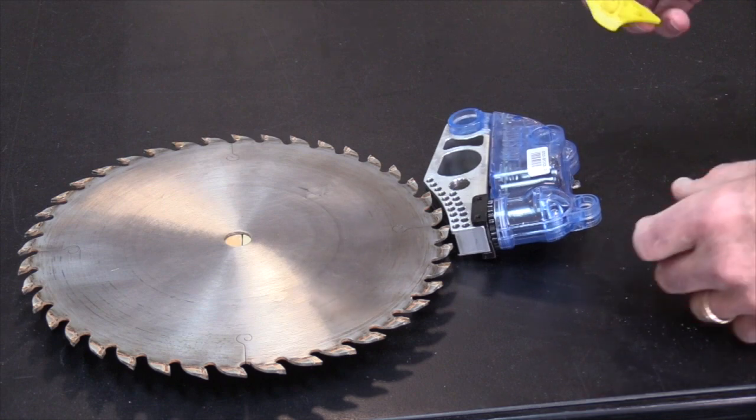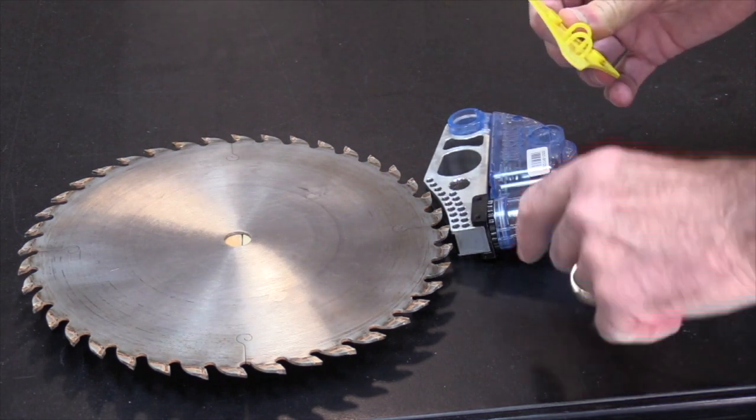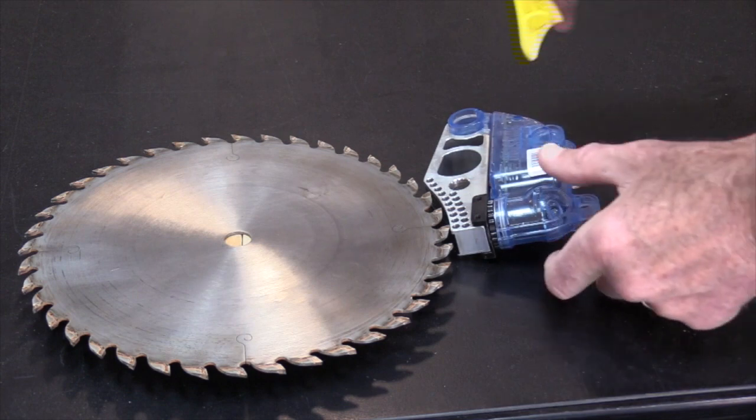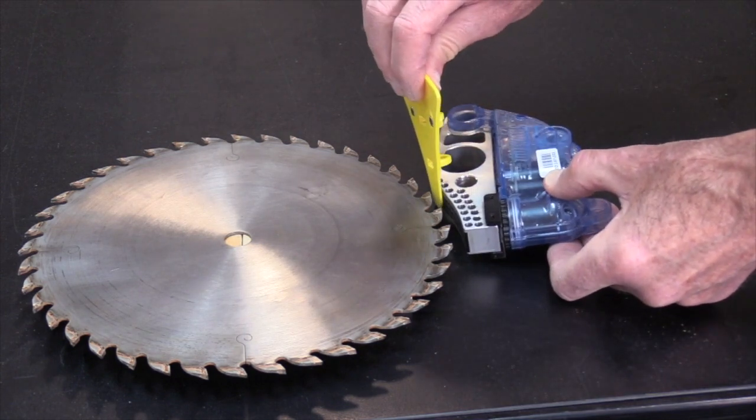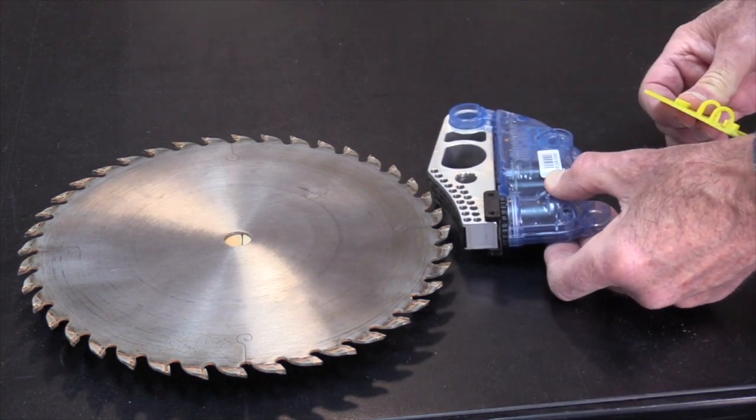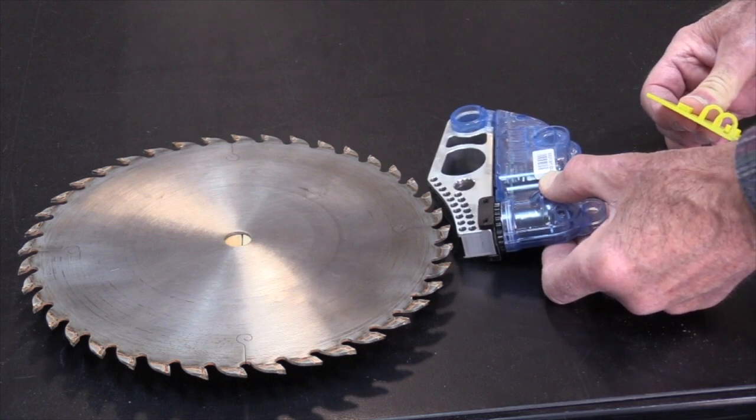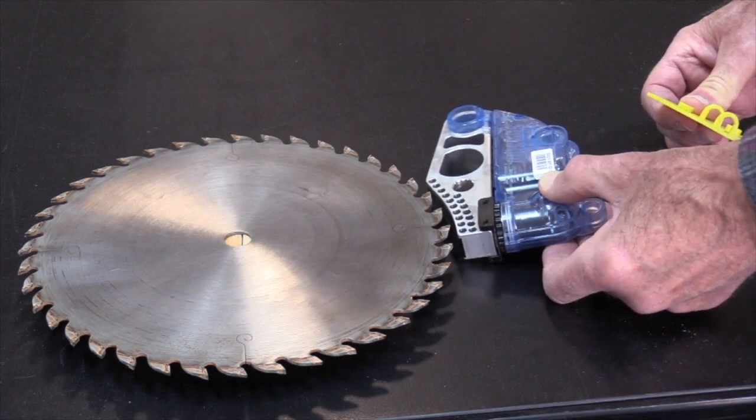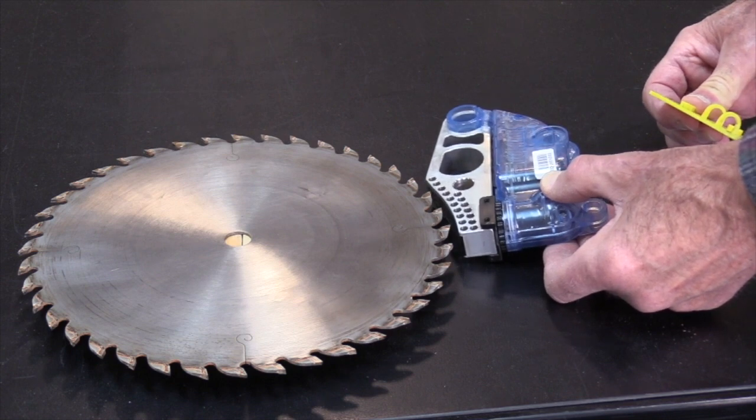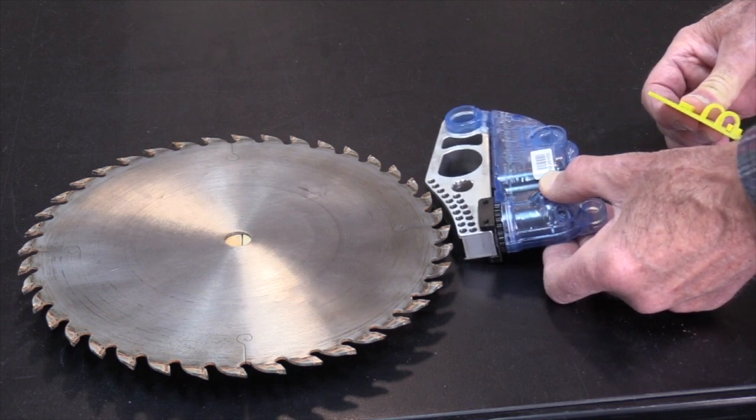After you have adjusted the clearance, rotate the blade one full revolution to make sure the cartridge clearance is correct for the entire circumference of the blade. The reason for that is combination blades have different height teeth, and after a blade has been reconditioned, its diameter may vary slightly around the circumference.